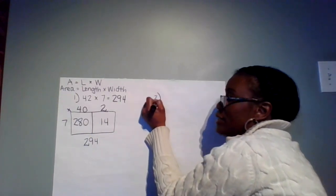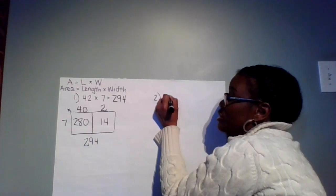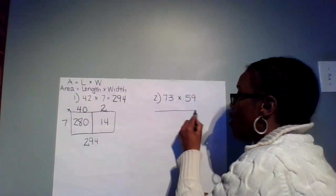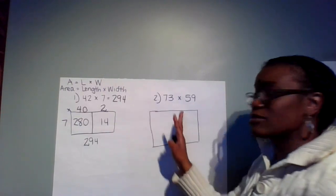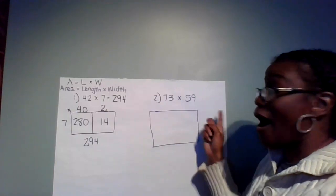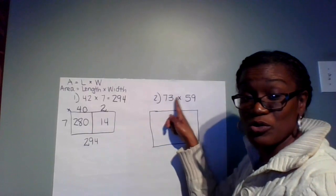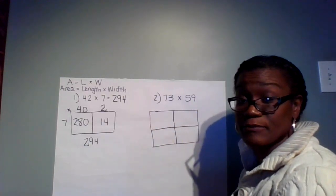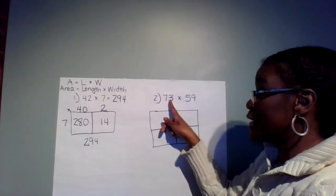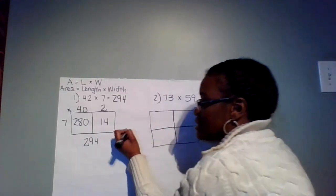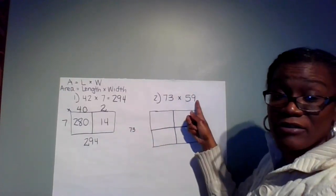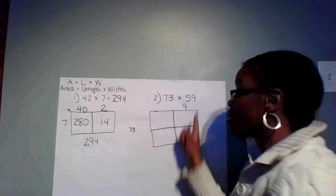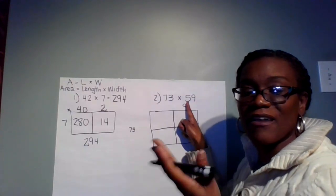Now we're going to practice a two-digit by two-digit number. Our equation is going to be 73 times 59. The first step: draw a box — this one is a little bigger because I have more numbers. Let's count: one, two, three, four — I have four numbers, so my box needs four spaces. I'm going to make 73 my width and 59 my length. What is the value in the ones column of 59? Nine. What is the value of the 5 in the tens column? 50.